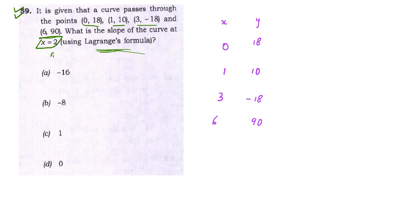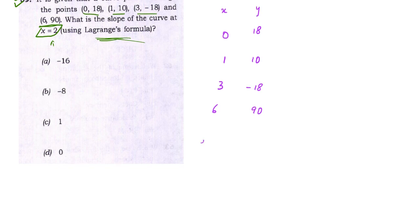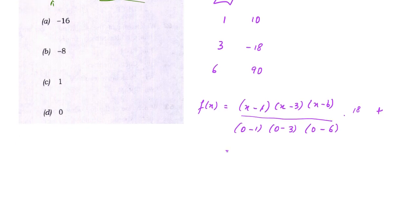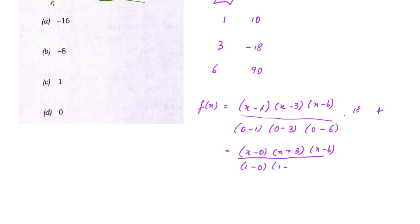Now let us begin with the Lagrange formula. For the first term, x_i = 0: numerator is (x−1)(x−3)(x−6), denominator is (0−1)(0−3)(0−6), multiplied by y_i = 18. For the second term, x_i = 1: numerator is x(x−3)(x−6), denominator is (1−0)(1−3)(1−6), multiplied by 10.